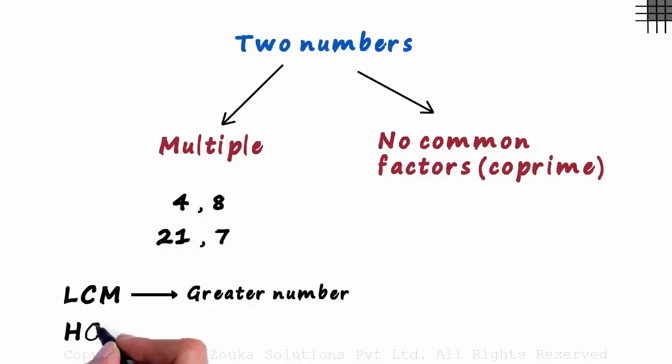And the HCF will always be the smaller number. The HCF of these two numbers will be 4, and the HCF of these two numbers will be 7.